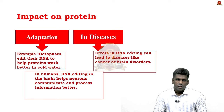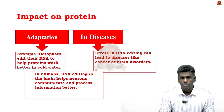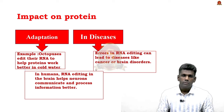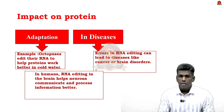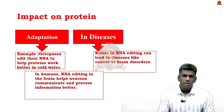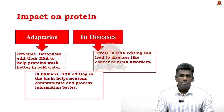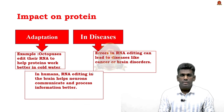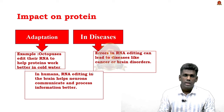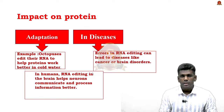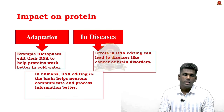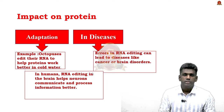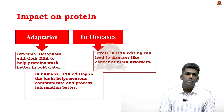RNA editing is crucial for processes like brain function and immune response, and helps organisms survive in different conditions. For example, octopuses edit their RNA to help proteins work better in cold water, and in humans RNA editing in the brain helps neurons communicate and process information. RNA editing occurs naturally in humans and other animals. Errors in RNA editing can lead to diseases like cancer or brain disorders. Scientists are currently studying RNA editing for treatments that do not permanently alter DNA, which may be safer for correcting certain diseases.